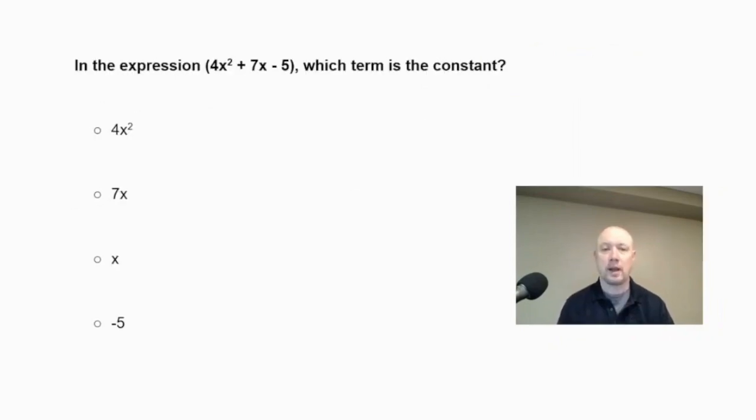In the expression 4x squared plus 7x minus 5, which term is the constant? What we're looking for in our expression is the term that does not have a variable in it. We have the x squared, we have the x, and the only term without a variable is negative 5. So that means my constant is negative 5.